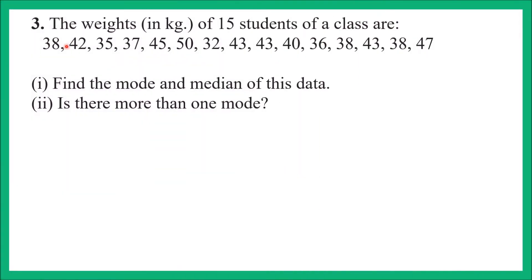Question number 3: The weights in kg of 15 students of a class are — 38, 42, 35, 37, 45, 50, 32, 43, 43, 40, 36, 38, 43, 38 and 47. Find the mode and median of this data. Is there more than one mode? To find mode and median, we first arrange the data in ascending order.